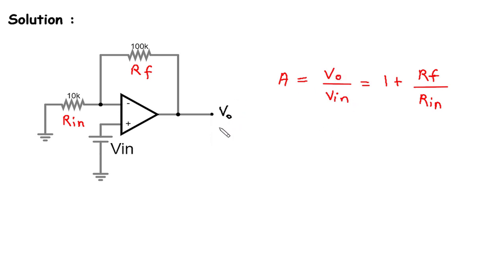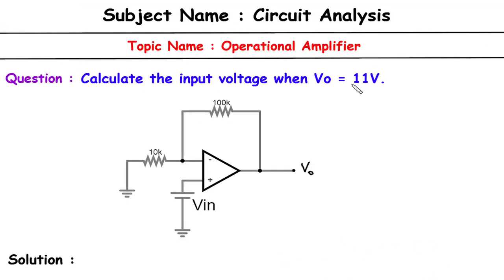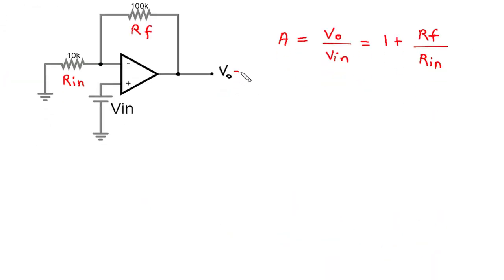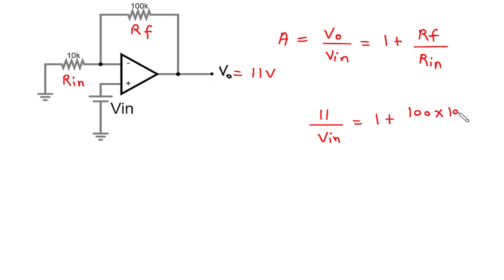We have Vo equal to 11V. Substituting into the equation: 11V divided by Vin equals 1 plus RF over RIN. RF is 100 kΩ (100 × 10³) and RIN is 10 kΩ (10 × 10³). The powers of 10³ cancel, leaving 11 divided by Vin equals 1 plus 100 divided by 10.